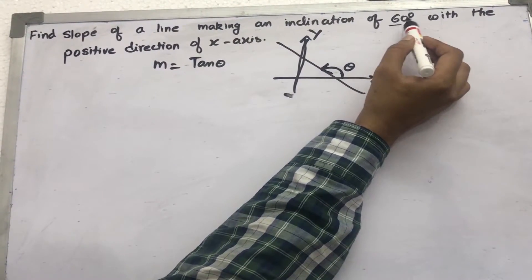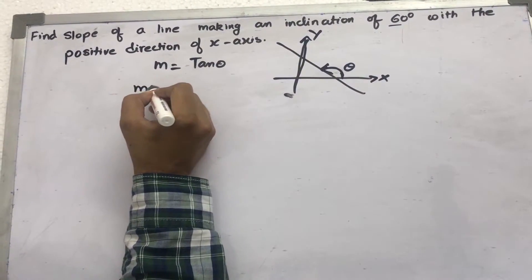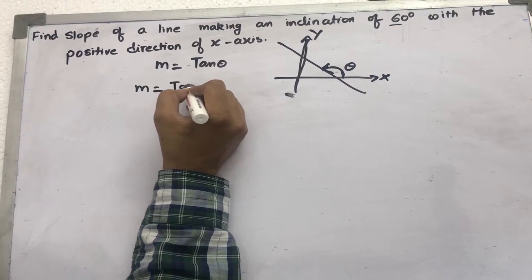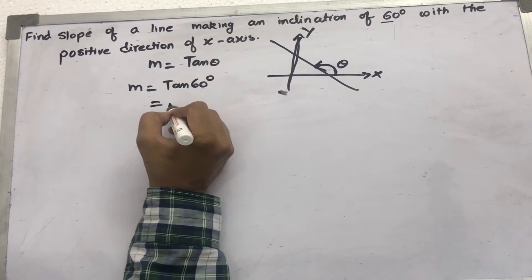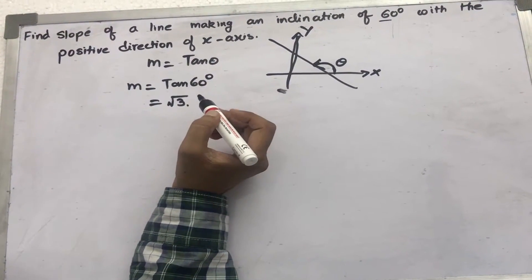Here theta is given as 60 degrees, so the slope will be tan 60 degrees, which is equal to root 3.